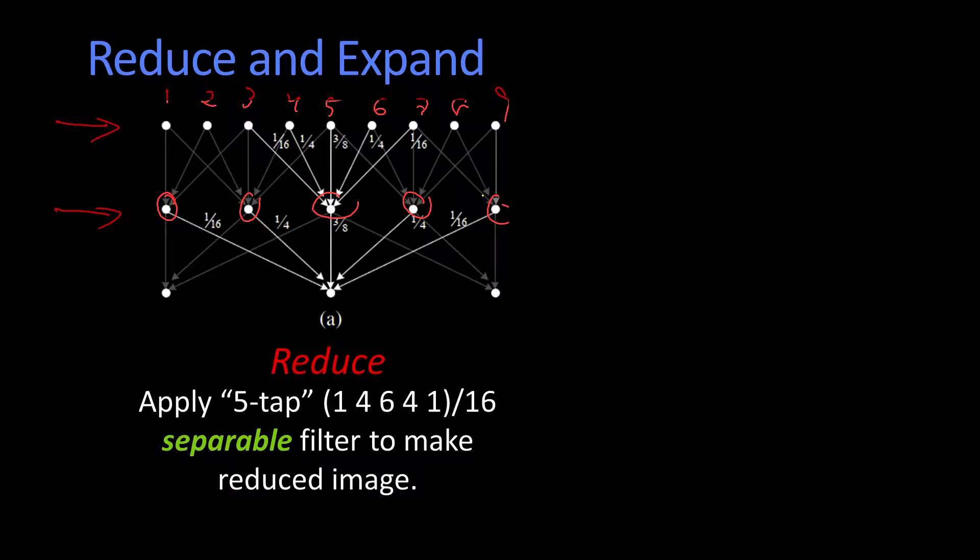So in fact, what this does is it simply says I'm going to take some location, here I use the middle, and I'm going to take what's called a five-tap filter. And here are the filters. It's 1/16, 4/16, 6/16, 4/16, 1/16. That's 1/16, 1/4, 3/8, 1/4, 1/16. That's the filter that I use to get the odd pixel here in the middle.